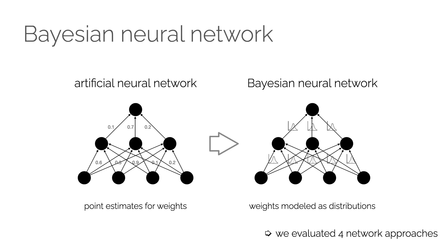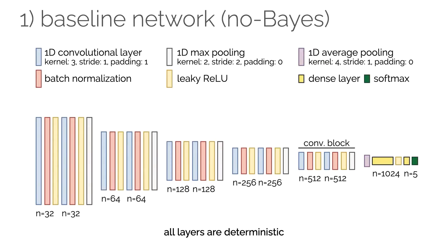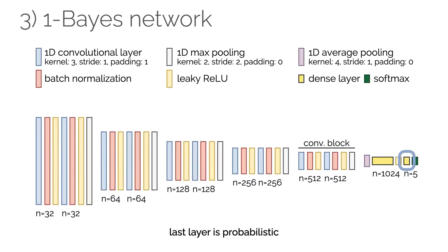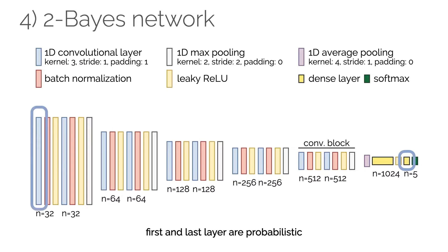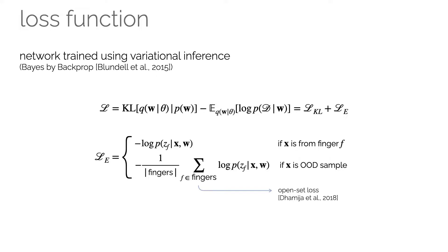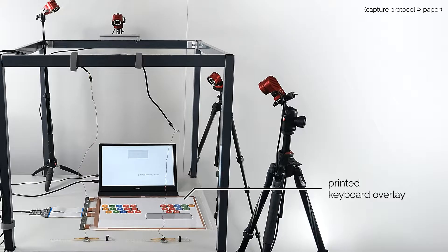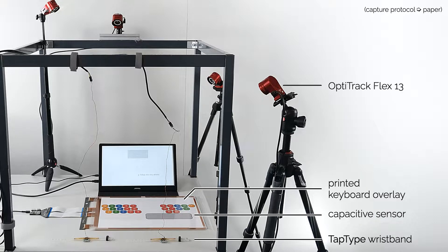Because any neural network layer could be probabilistic, we evaluated four different architectures: a deterministic baseline, an all-Bayes variant, one-Bayes where only the output layer is probabilistic, and two-Bayes with probabilistic first and last layers. We trained all networks using variational inference. For the negative log likelihood loss, we added an opposite loss to reject out-of-distribution events such as inadvertent activations. We assembled a data capture rig to record accelerometer signals for typing events, synchronized with finger tap events captured using a touch sensor. An OptiTrack tracking system allowed us to annotate finger identities and precise locations.